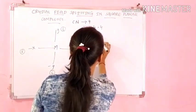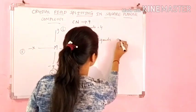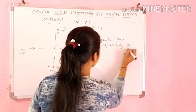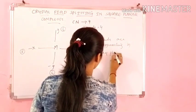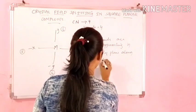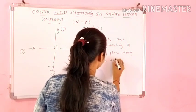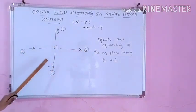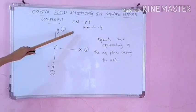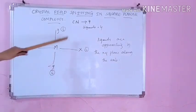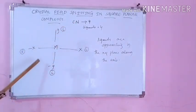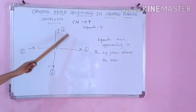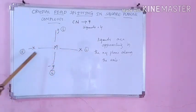You have to remember this. In square planar, ligands are approaching in the x,y plane along the axes. I have to remember this. It means ligands are along the axes in only the x,y plane. They are nowhere connected to z. So the 2 z-axis ligands that exist in octahedral — those 2 along z are removed. Whatever complex is remaining, that is nothing but your square planar complex.